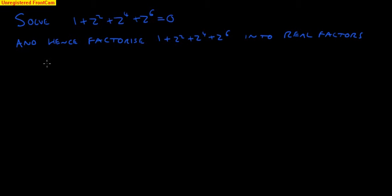So what we've got here is 1 plus z squared plus z to the 4 plus z to the 6 equals 0.